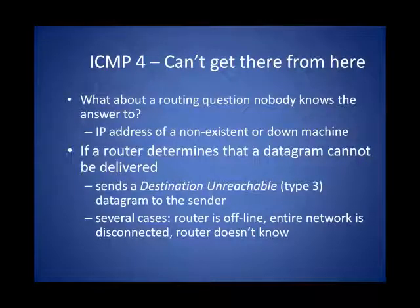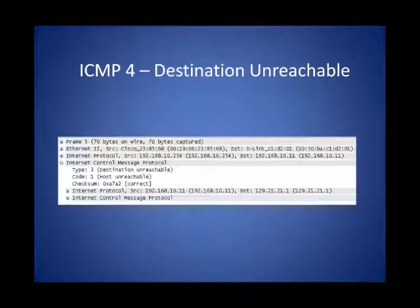When a host sends a router a packet asking it to forward to the destination, the router consults its routing table. If the router doesn't know the destination directly, it sends it to its default gateway. But if after exhausting its routing table it still doesn't know a pathway or a default pathway, the router has to tell the source host it didn't know how to get there. The ICMP error message destination unreachable is used for this purpose. Here we have our ICMP type 3 error message, the destination unreachable — in this case a code 1 host unreachable message.